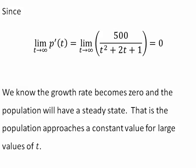Since the limit as t goes to infinity of p prime is equal to 0, we know that the growth rate becomes 0, and the population will have a steady state. That is, the population approaches a constant value for large values of t.